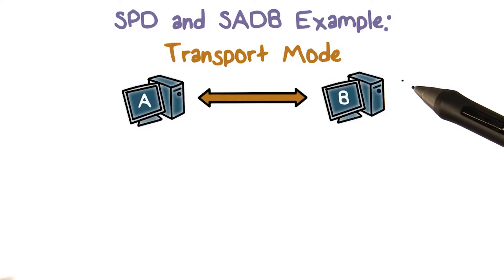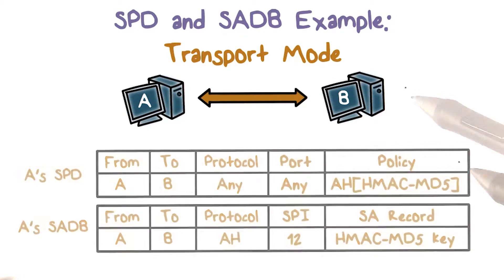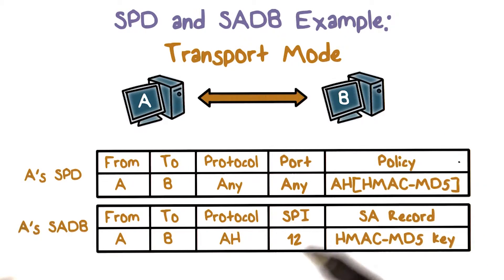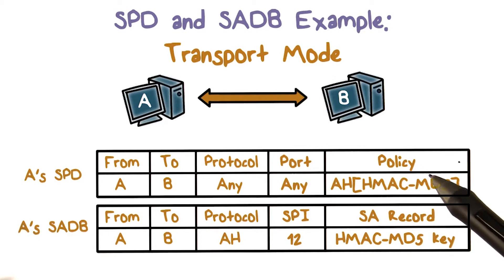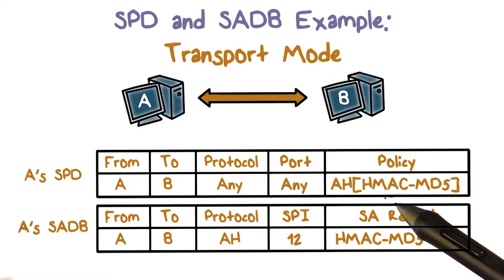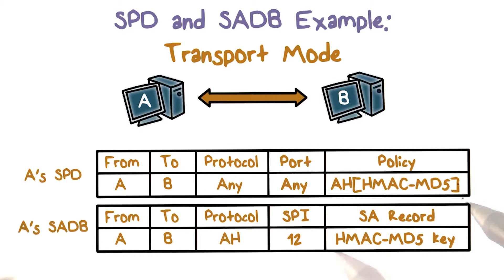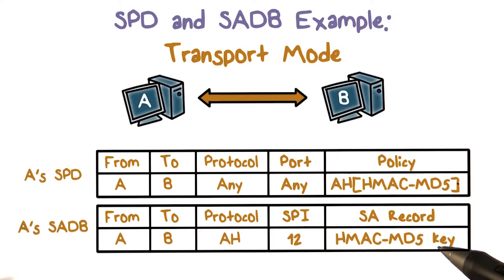First, let's consider the end-to-end or transport mode policy from A to B. Suppose the policy says that for any traffic from A to B, the packets need to be authenticated. And further, the suggested algorithm is to use HMAC with MD5 as the embedded hash function. This policy is stored as an entry in SPD.